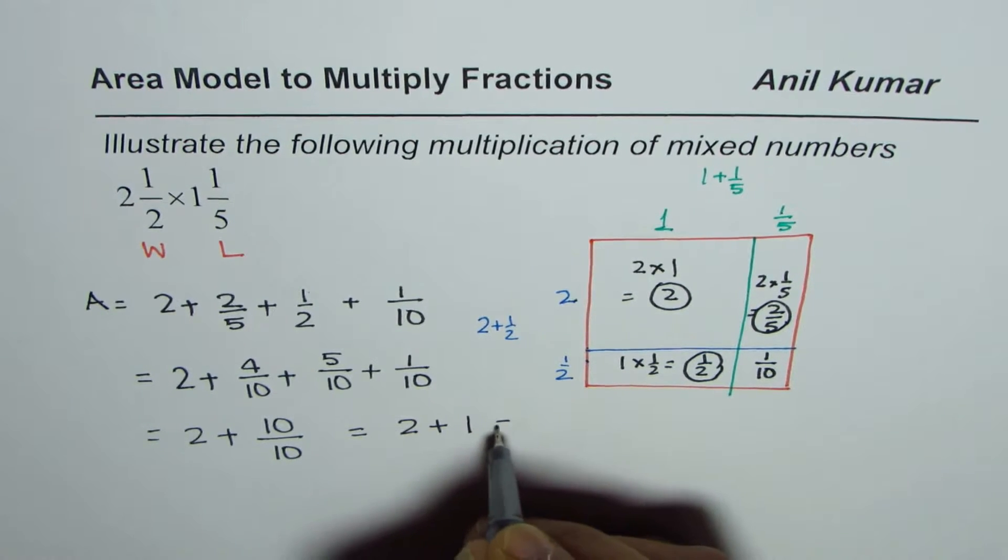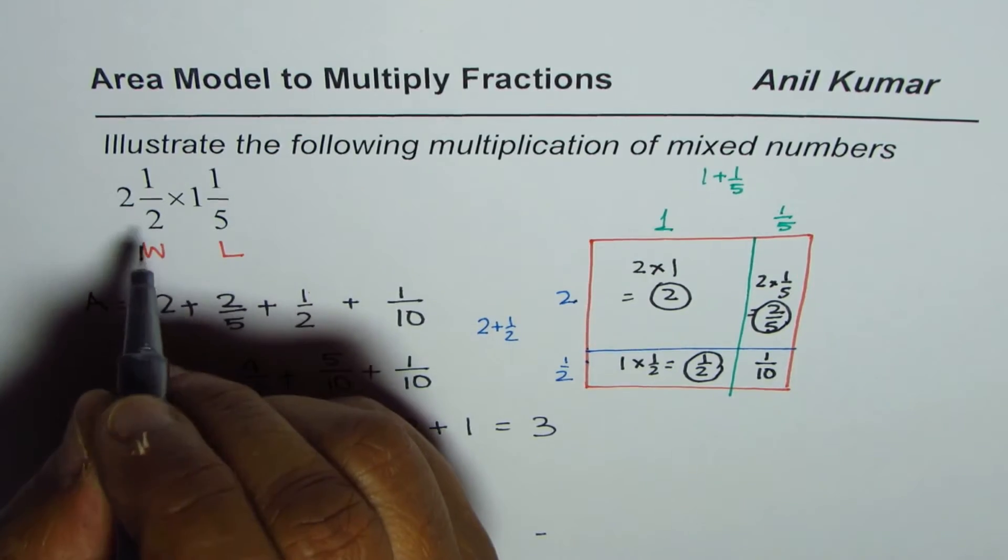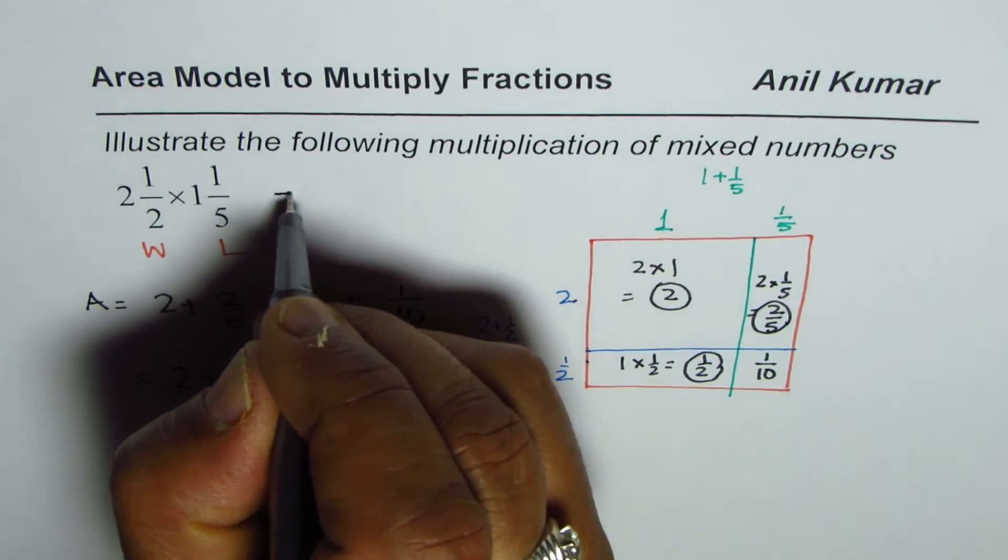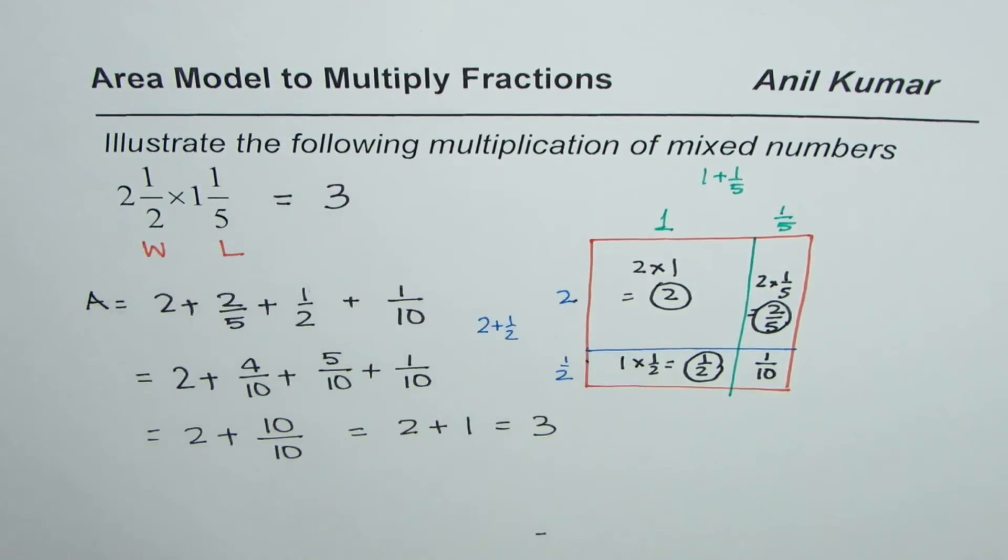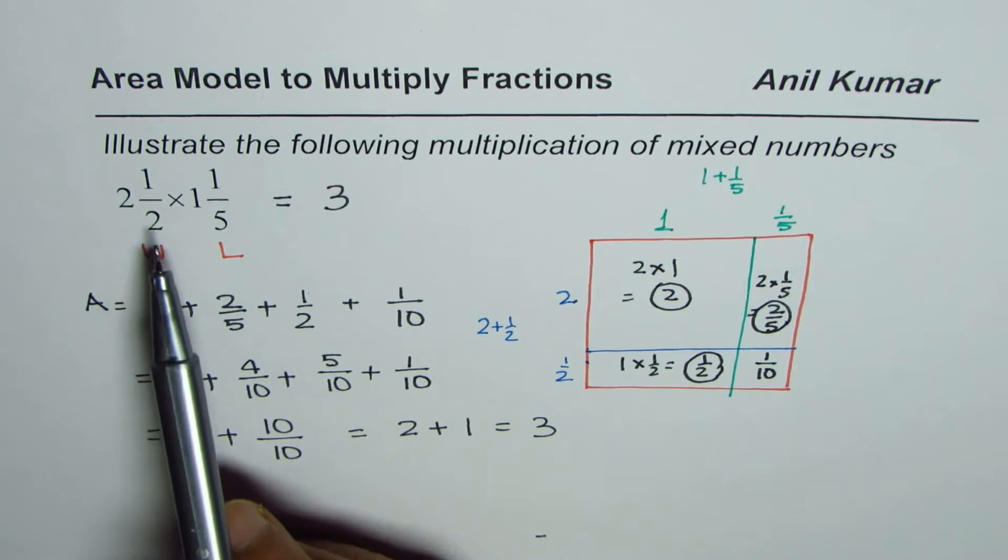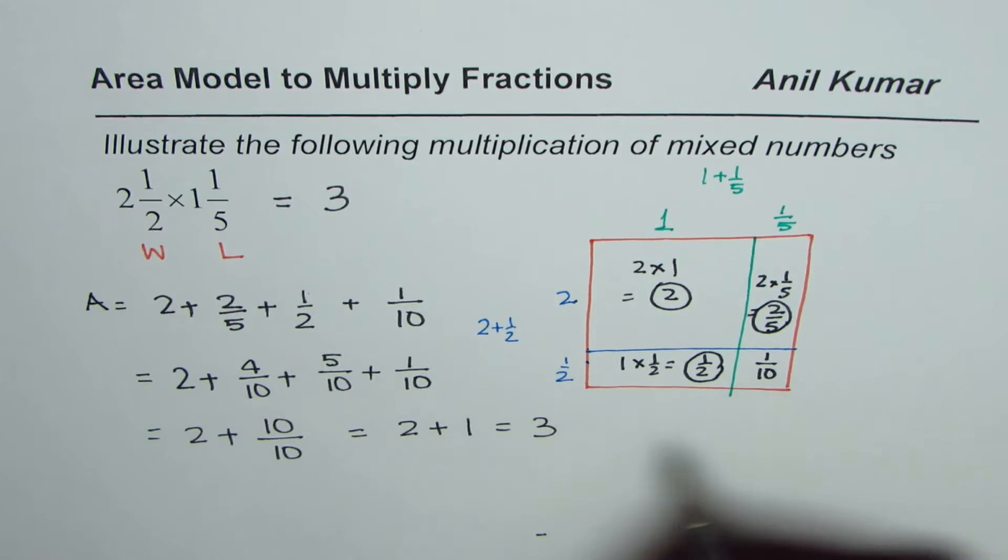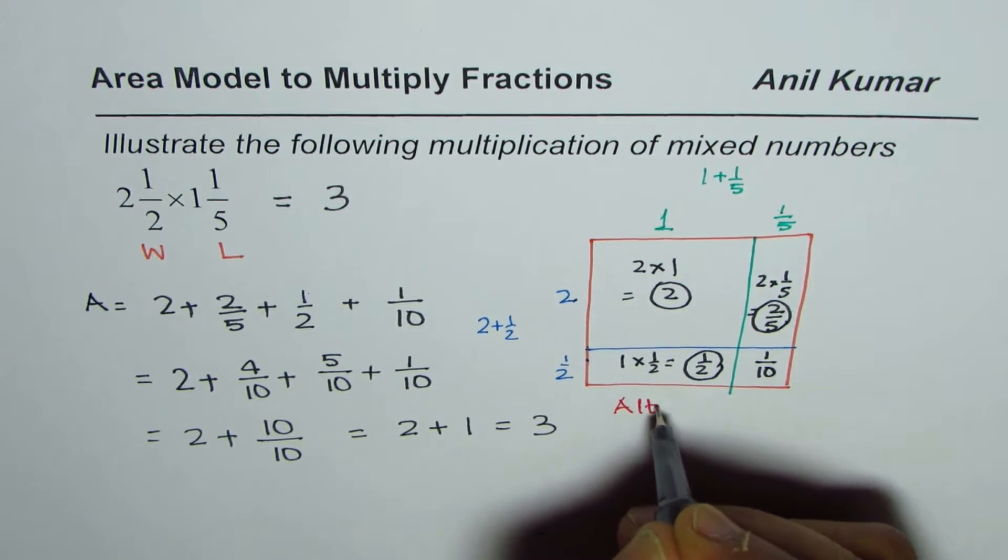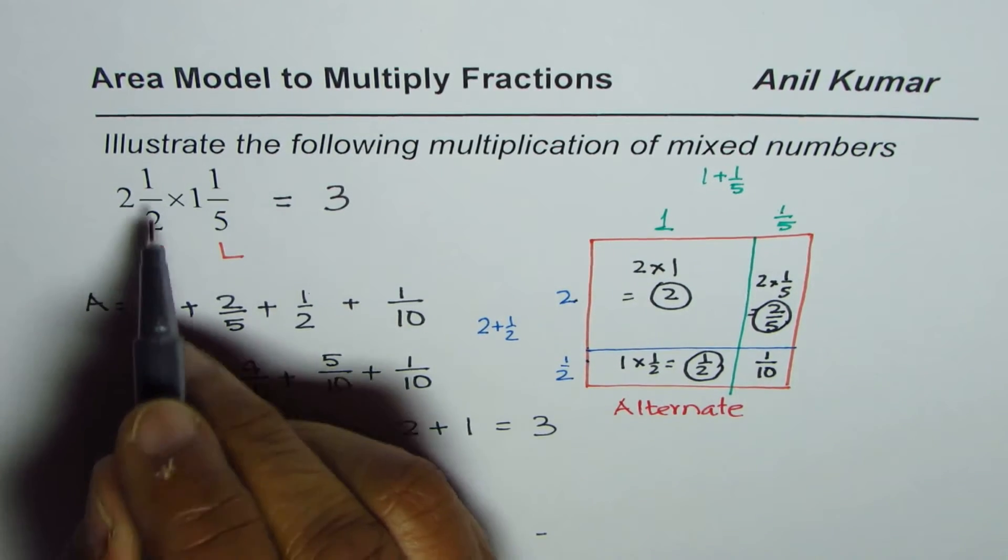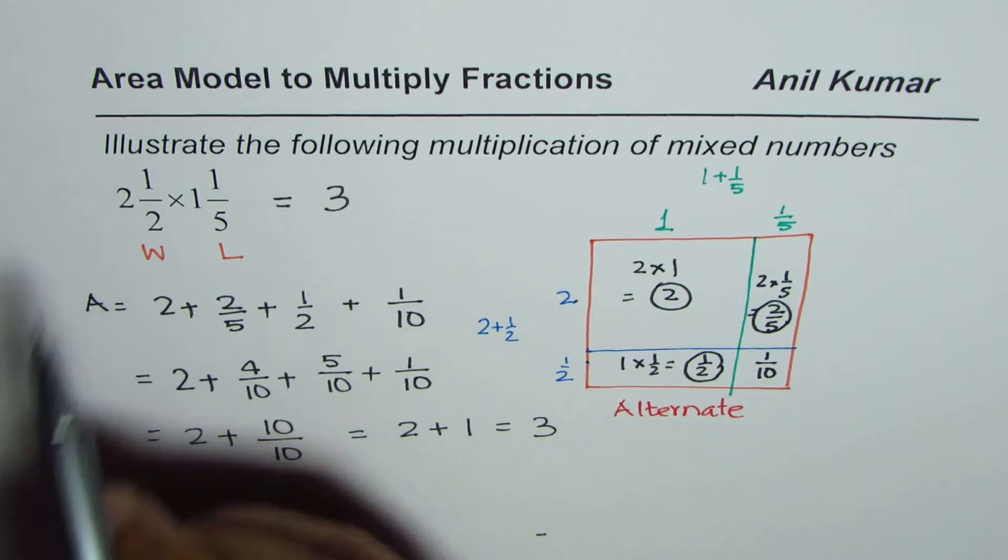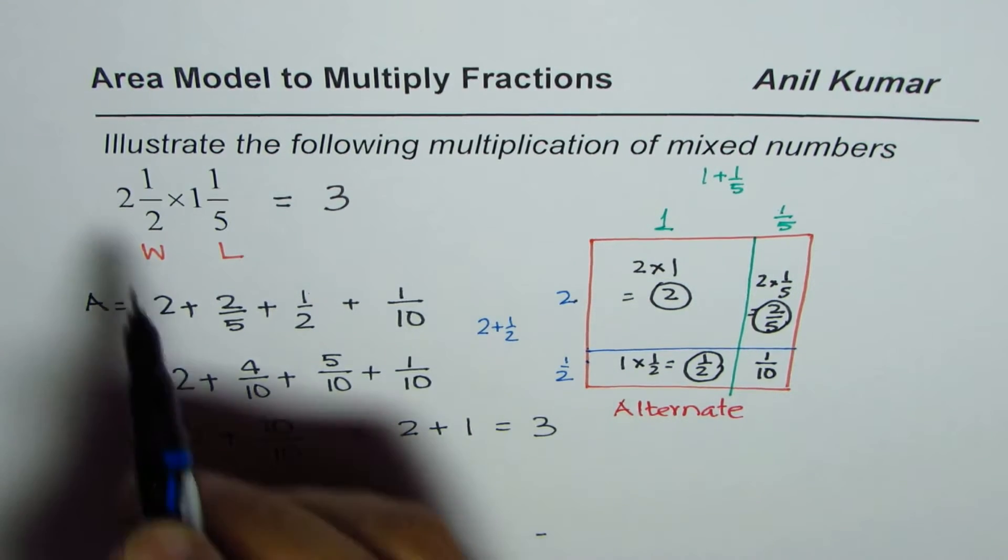As you know, 10/10 is 1 whole, so we get 2 + 1 = 3. Therefore when you multiply this you get 3 as your answer. That is how you can multiply mixed numbers using the area model. Let us check our result by doing an alternate method.